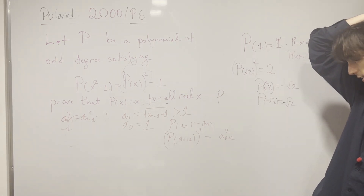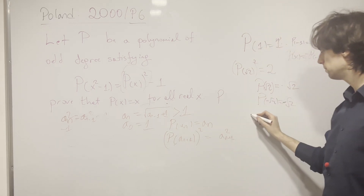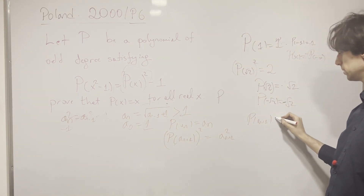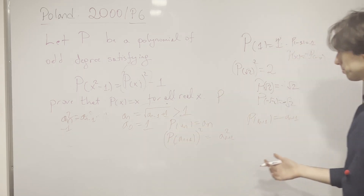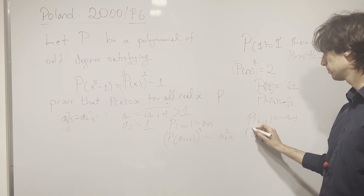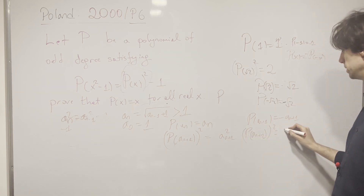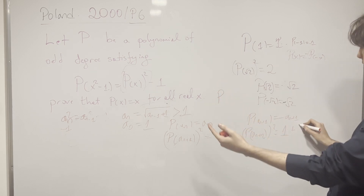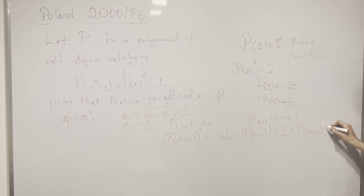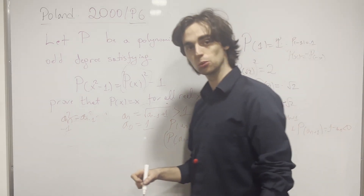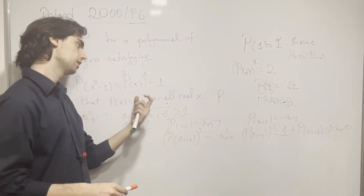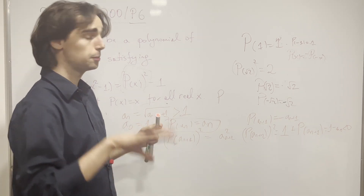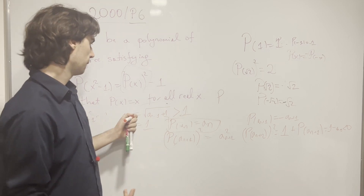So we have P(a_{n+1}) equals plus or minus a_{n+1}. Assume it's negative a_{n+1}. Then for the next term, when we plug in a_{n+2}, we get P(a_{n+2} squared minus 1) equals 1 plus P(a_{n+1}) equals 1 minus a_{n+1}, which is less than zero. But this is a square, so that's a contradiction — and we know inductively that P(a_n) equals a_n must hold throughout the sequence.